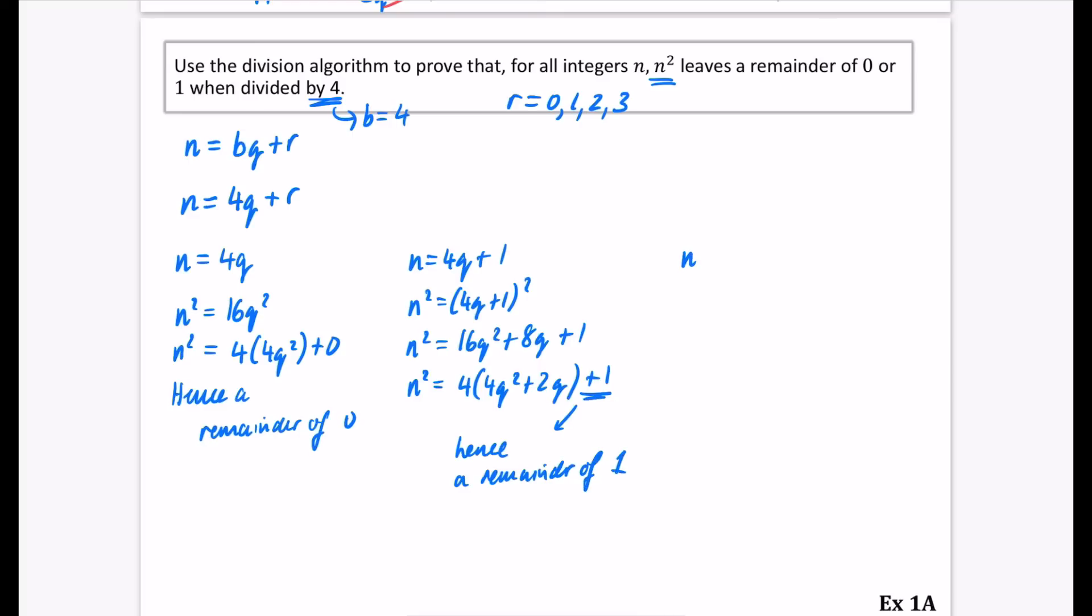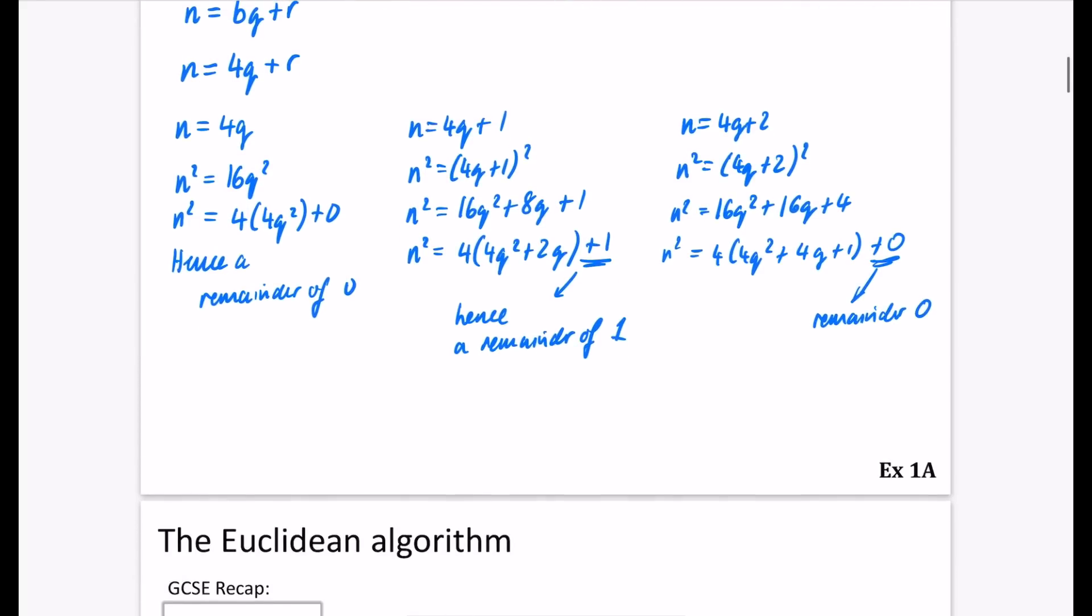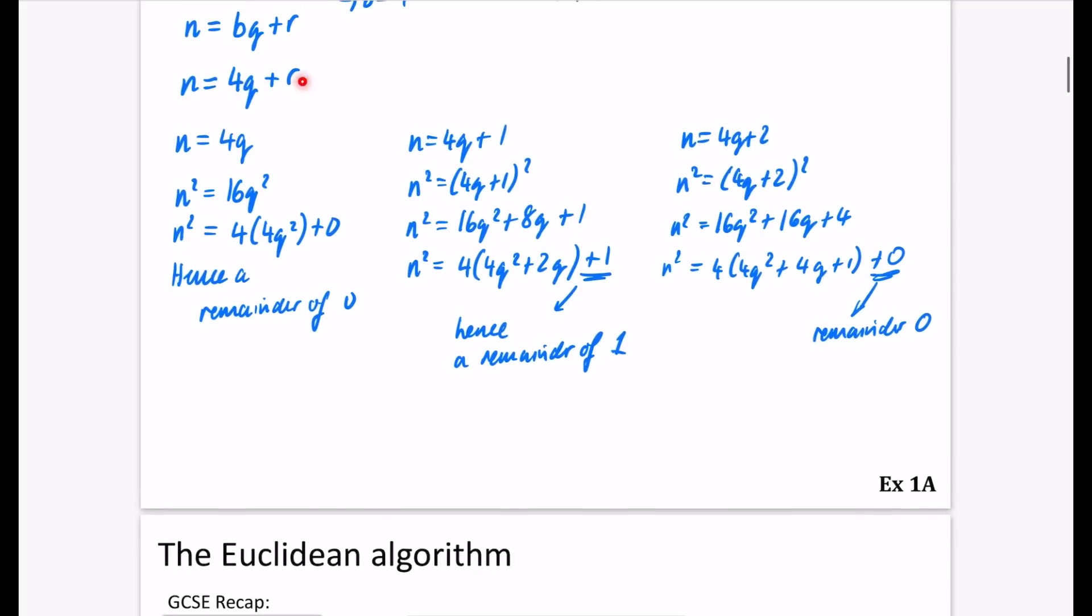So we're kind of doing proof by exhaustion. We're exhausting all of the different options that we can do. You can see where this is going to go. So I'll do the same thing here. I've got my 4q plus 2 squared. That is 16q² plus 16q plus 4. So that's 4 lots of 4q² plus 4q plus 1. I don't have to do the plus 0, but there is now a remainder 0. Just to show that there's nothing extra at the end. It can just be multiplied by 4. And notice how these are all in that same form, they're still in that same form of 4q plus r. It's just a different version of q that we have.